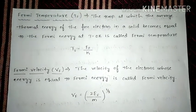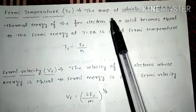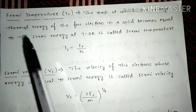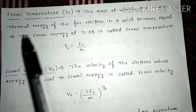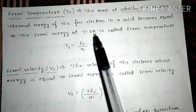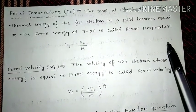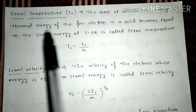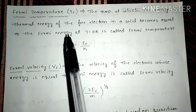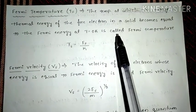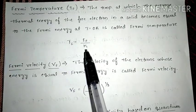Today we will discuss what is meant by Fermi temperature Tf. The temperature at which the average thermal energy of a free electron in a solid becomes equal to the Fermi energy at 0 Kelvin is called Fermi temperature. It is given as Tf = Ef divided by K.